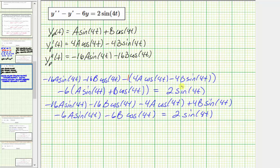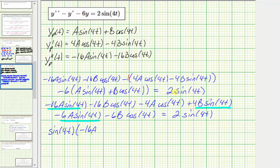For the next step, let's factor the left side. Factoring out sine four t from the terms that contain it — this term, this term, and this term — we factor out sine four t, leaving the quantity negative sixteen A plus four B minus six A.